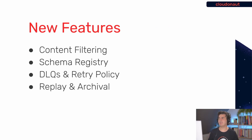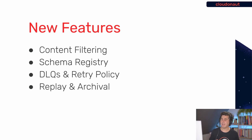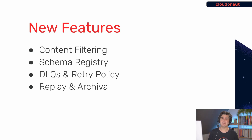So what are the new features? First, content filtering, which allows richer filter rules compared to what we had before. We have a schema registry where we can store schemas of events, but we can also infer the schema by looking at what's coming into the event bus. We now have dead letter queues and retry policies, so if the target cannot be invoked the event isn't just dropped. And last but not least — one of my favorites — is replay and archival: you can capture all events and at any time replay specific events into your system. For example, if a deployment corrupted your database you can just rerun all the events from that period.